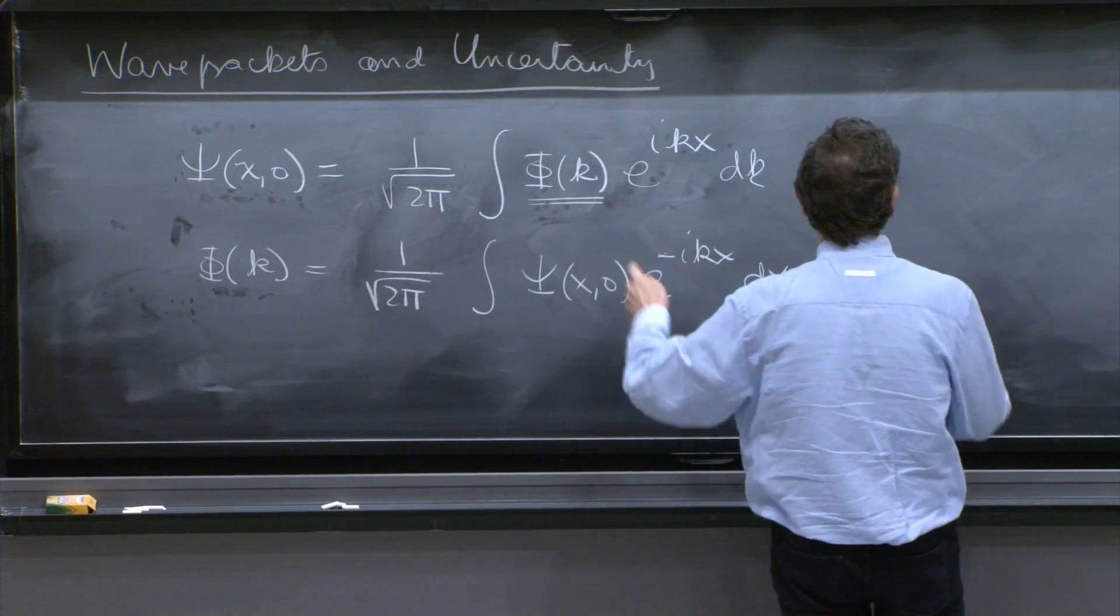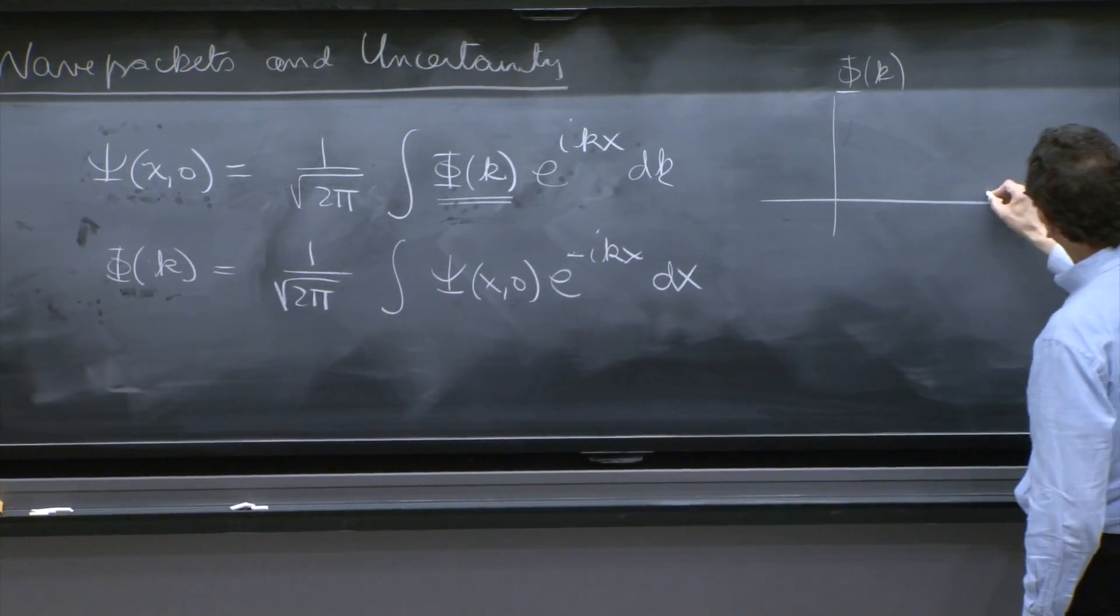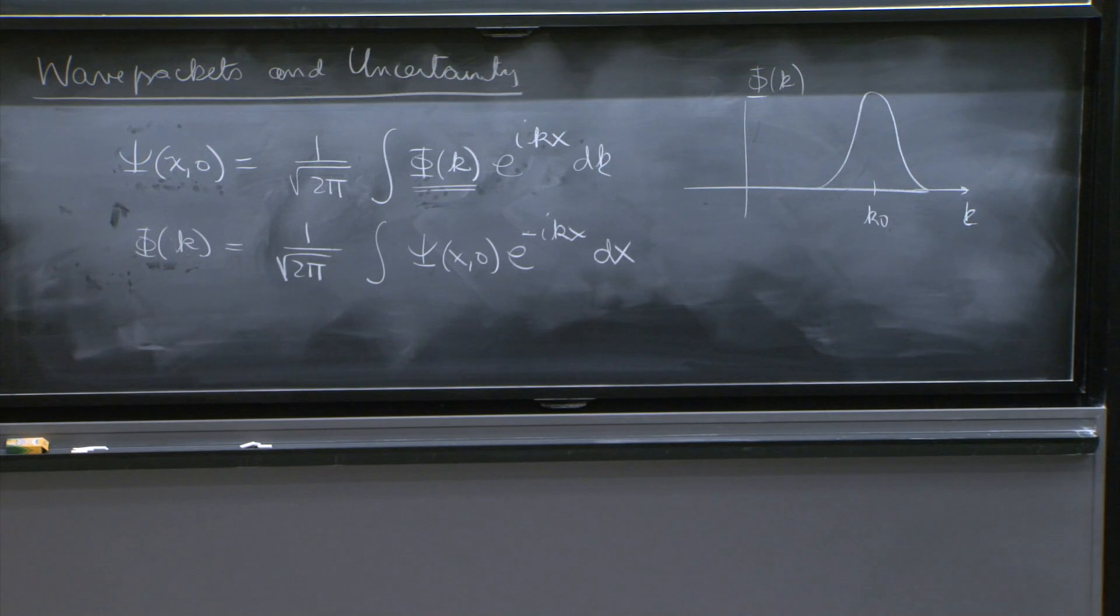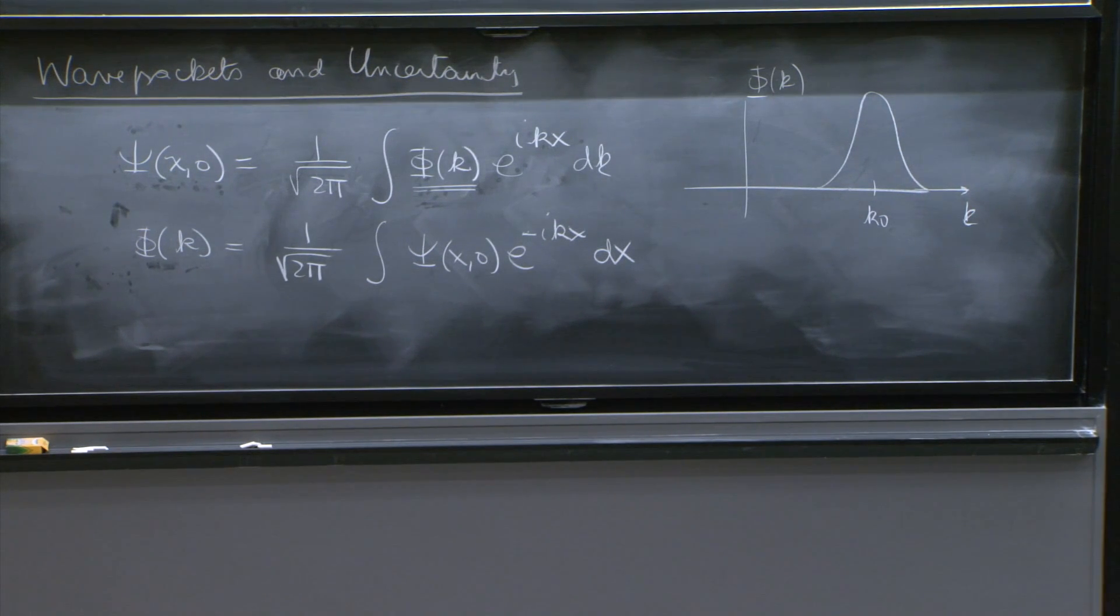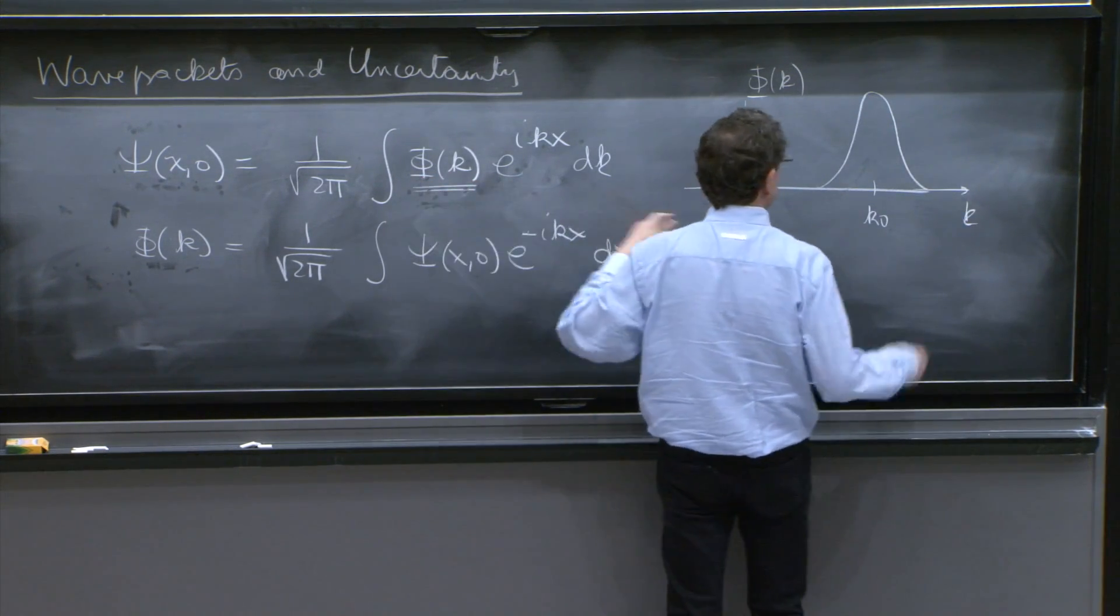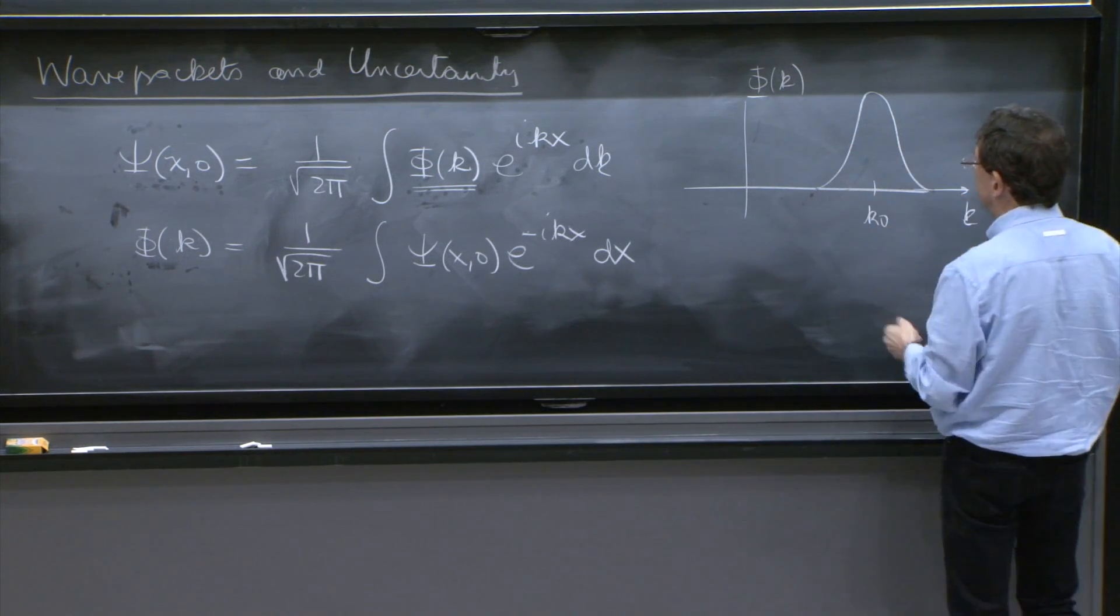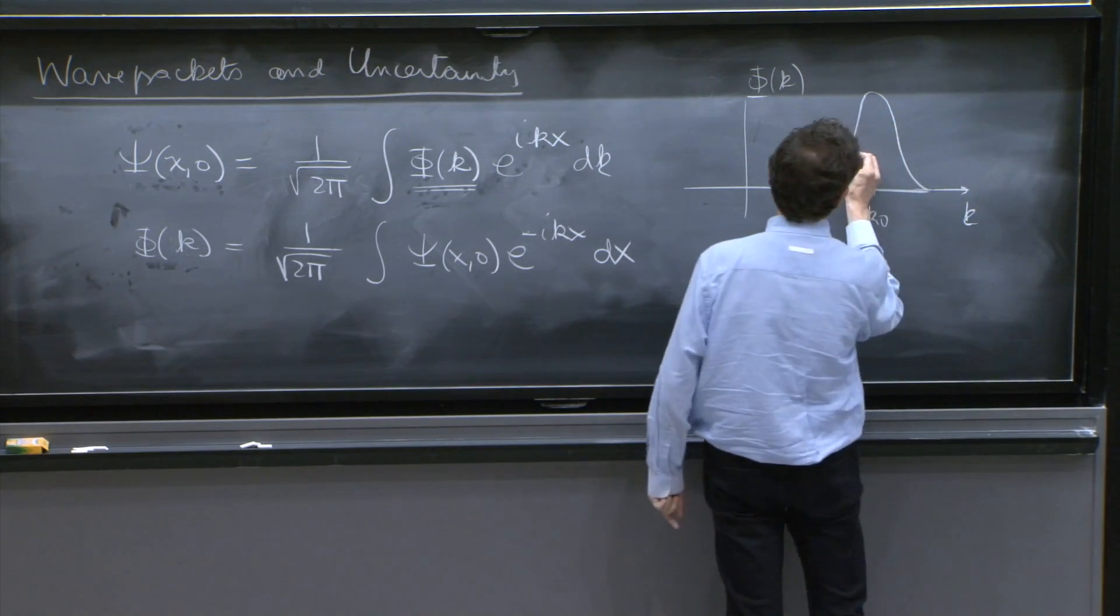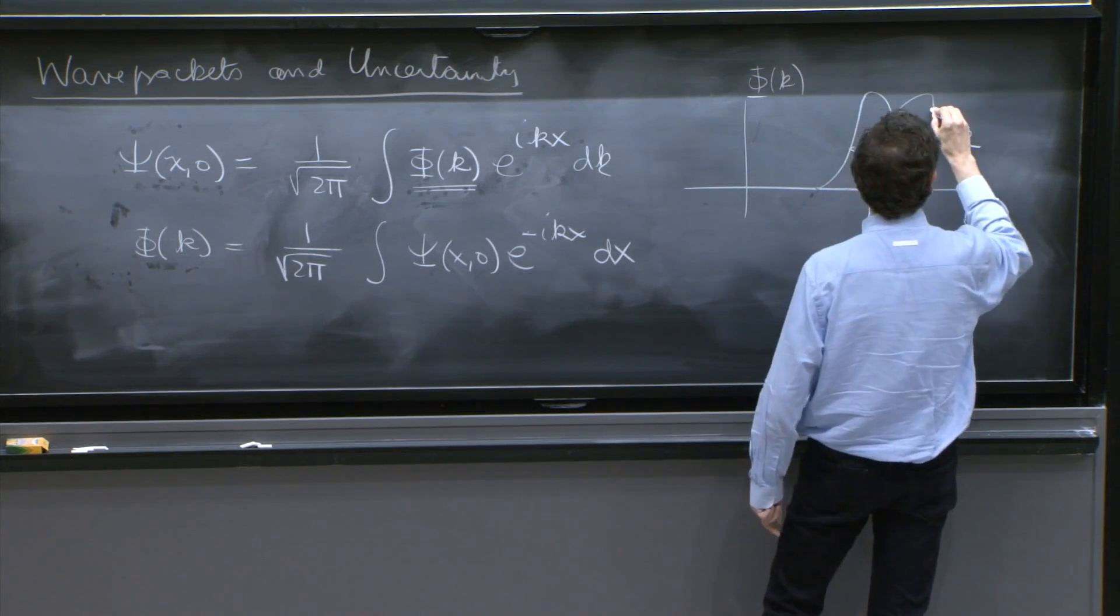Now, as before, we will take a φ of k. It depends on k and is centered around some value k0. It's some sort of nice centered function. And it has, then, we say, some uncertainty in the value of the momentum. That is, this signal, this φ of k that we're using to produce this packet, has some uncertainty. It's not totally sharp. It's peaked around k0, but not fully sharp. So the uncertainty is called Δk, and it's some typical width over here. Δk is the uncertainty.